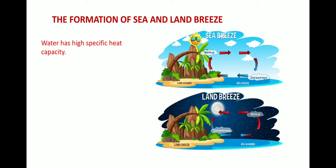We all know that water has high specific heat capacity. As a result it gets heated more slowly compared to the land, because compared to land, water has high specific heat capacity and thus it takes a lot of time for water to get heated as well as to cool down. So land gets heated and cooled very rapidly compared to water.